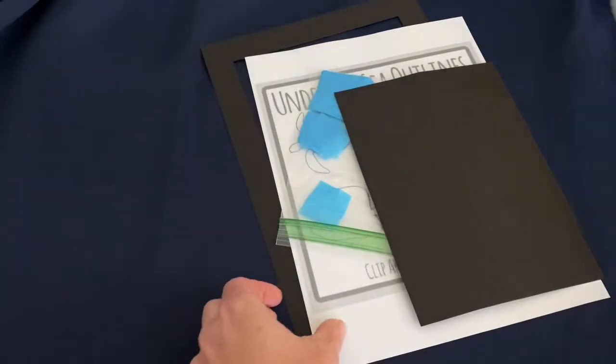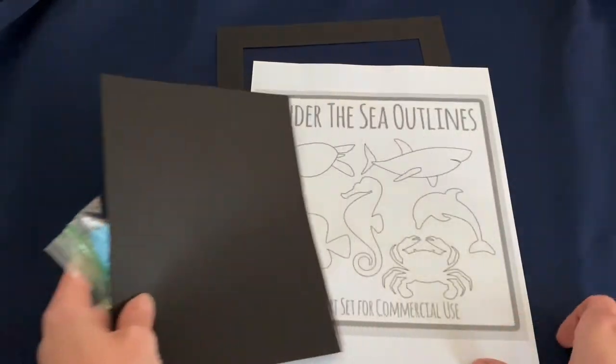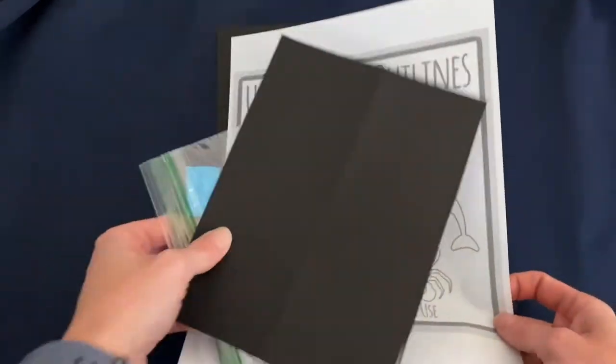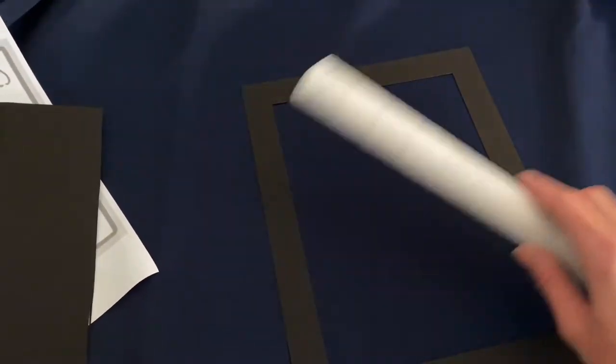So adults, there are a few steps you need to do in advance to prepare this for your child. The first thing we're going to do is attach this clear contact paper to this frame, and this is the trickiest part.